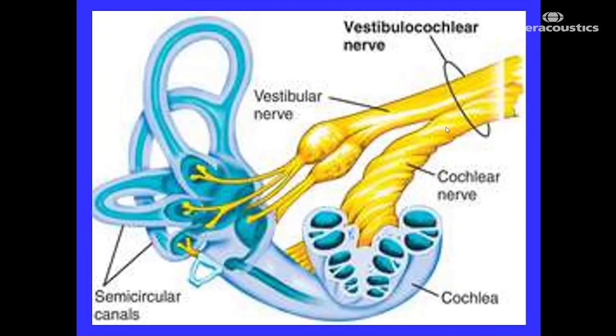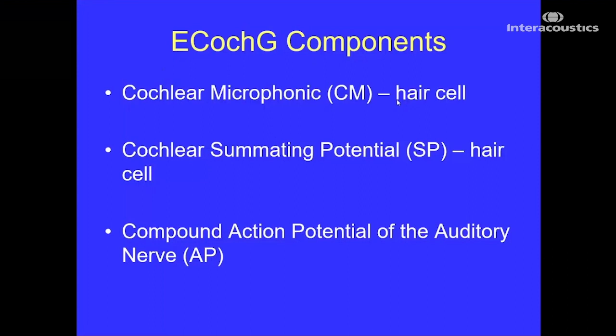The ECOG components: the cochlear microphonic (CM) is generated by the hair cells in a normal ear, dominated by the outer hair cells, whereas we now think the cochlear summating potential is a product of inner hair cell transduction. The compound action potential of the auditory nerve represents the synchronous firing of several thousand nerves. It's important to remember that an individual nerve firing is all or none — each individual nerve fires at maximum capacity or doesn't fire at all — but the combination of several thousand firings is a graded response.